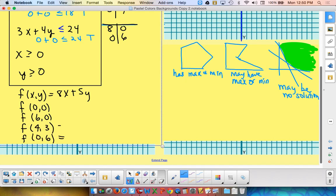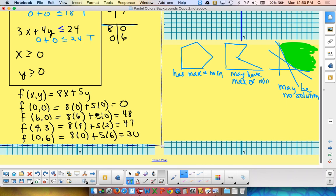So, you're actually going to sub in zero, zero, six, zero, four, three, and zero, six. And you're looking to find the maximum, in this case, we're looking for the maximum and minimum values. So, it's like saying if I put zero in for x and zero in for y, well, that's going to get me zero. If I put in six, zero, that's going to give me forty-eight plus zero or forty-eight. Eight times four plus five times three. Thirty-two plus fifteen is going to be forty-seven. That's close. And last but not least, if I put in zero, six, I'm going to come up with thirty.